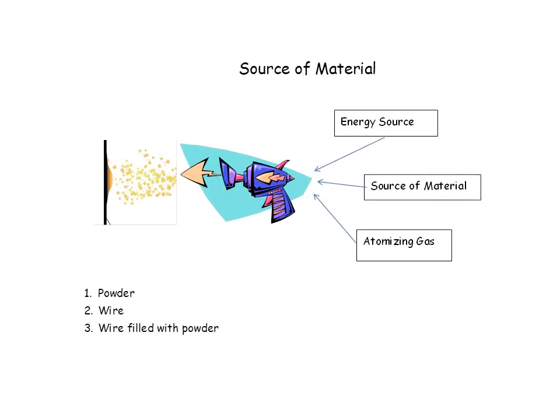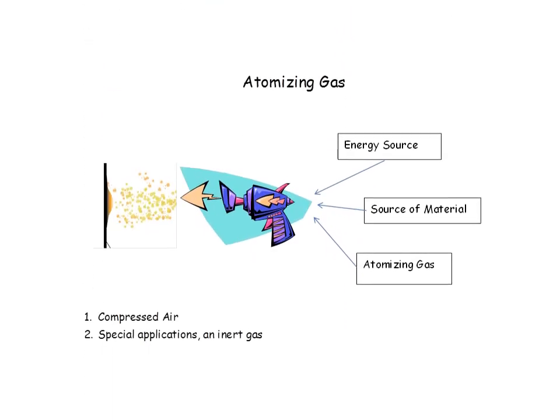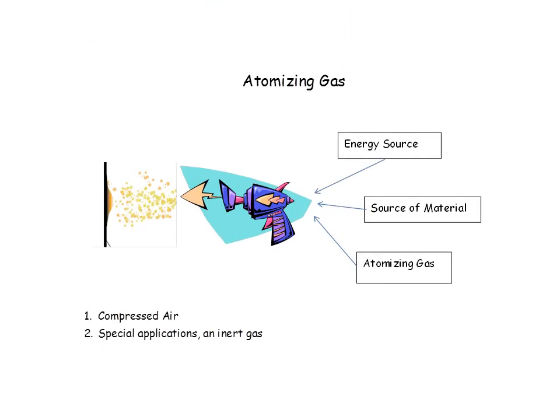You also need a source of material, which comes from one of three forms: it's either a powder, a wire, or a wire filled with powder — we call that a cord wire. Sometimes there's something called a rod, but that's essentially still a wire. For atomizing gas, oftentimes it's just compressed air, used both to cool the gun and to atomize and spray the molten material. Sometimes we use specialized inert gases if you want low oxidation. The atomizing gas can also be a byproduct of combustion.